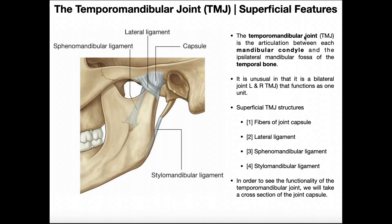We're going to begin by looking at the external structures of the temporomandibular joint. The temporomandibular joint is an articulation — it's a synovial joint — between the mandibular condyle and the mandibular fossa.